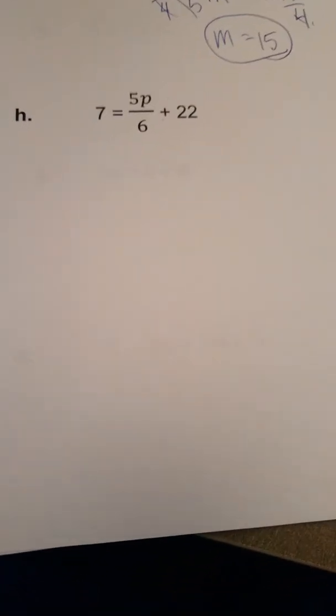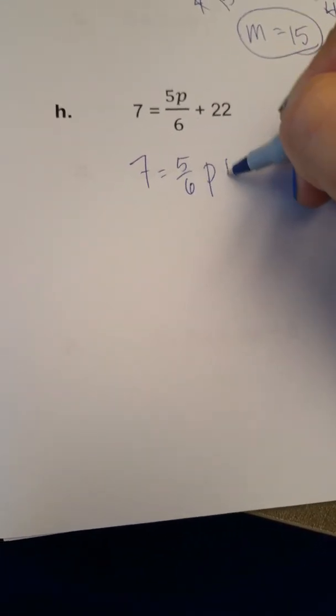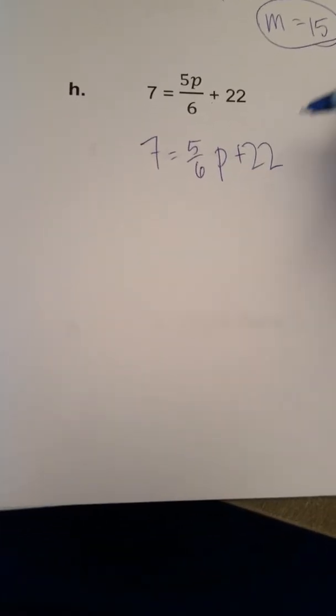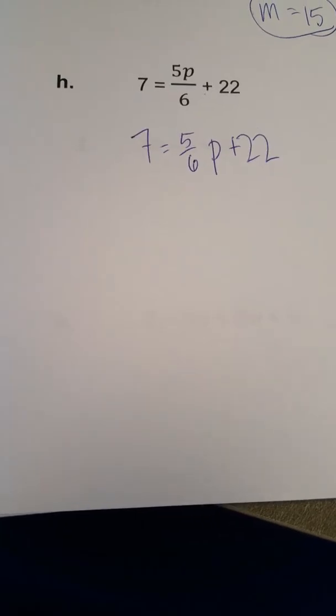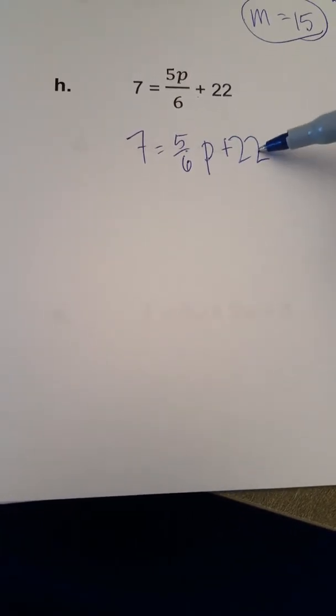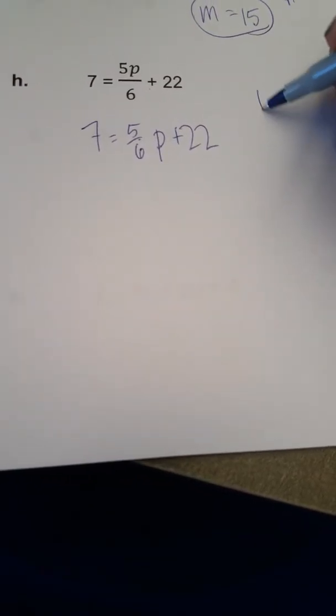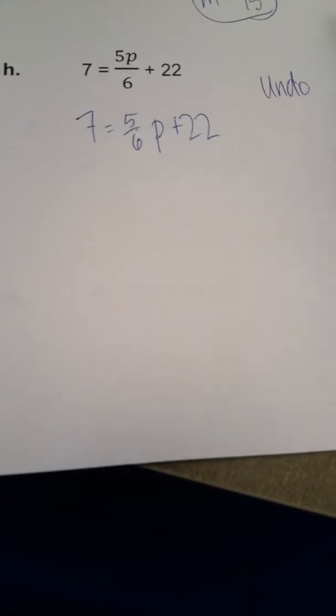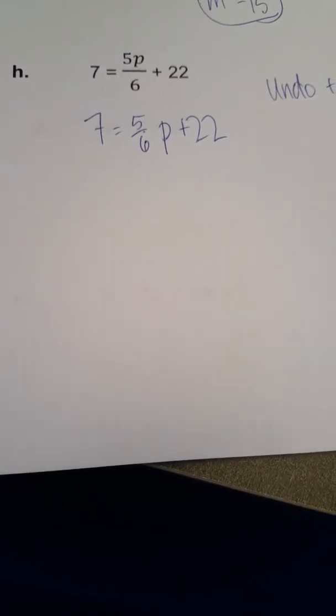Now, in this last example I have here of solving equations, I have 7 is equal to 5 sixths p plus 22, when I rewrite it with the fractional coefficient on my variable. Here, I have p being both multiplied by 5 sixths and a constant being added to it. When you have multiple operations like that going on, my suggestion is to undo addition and subtraction first.